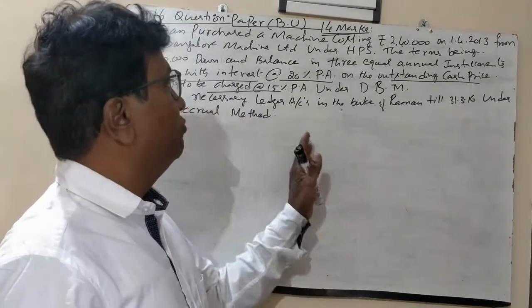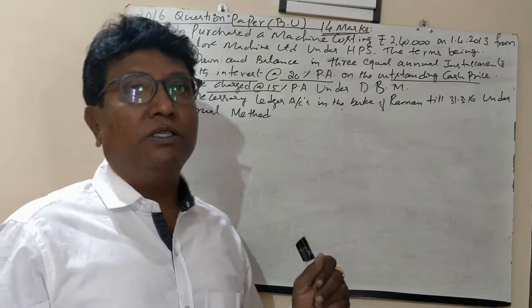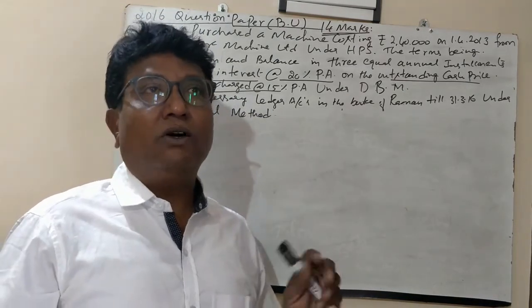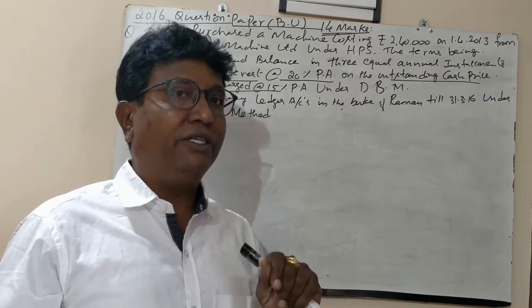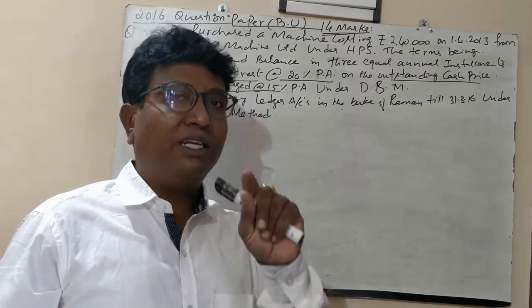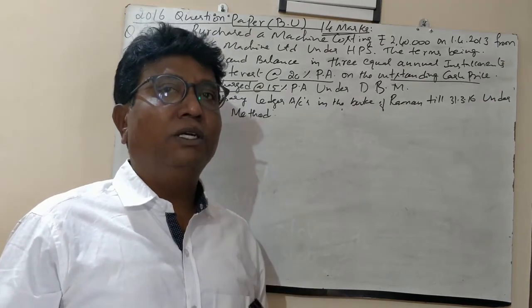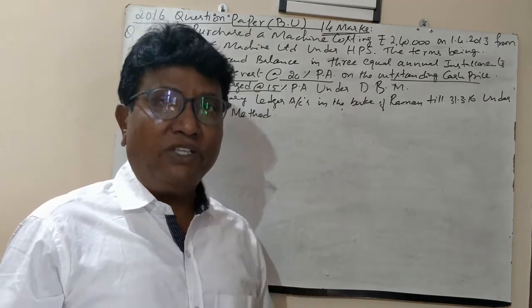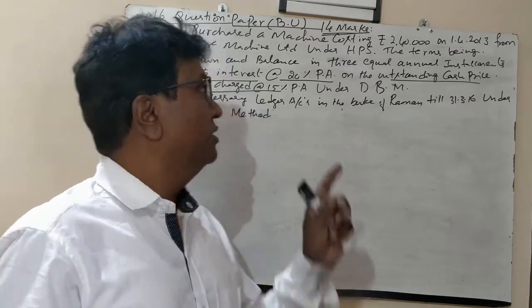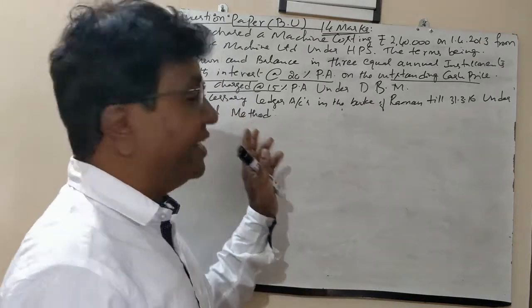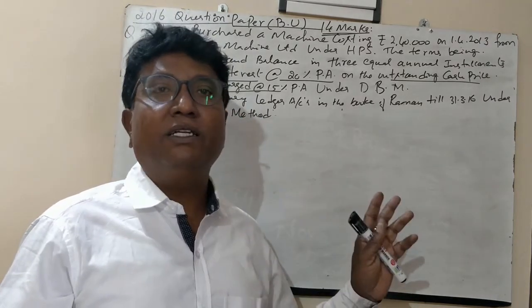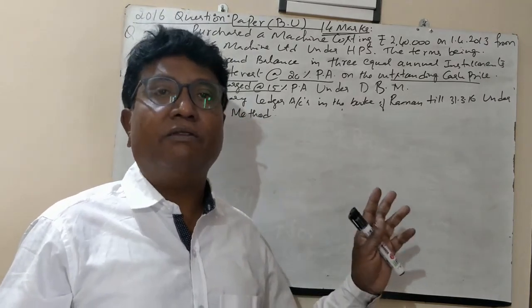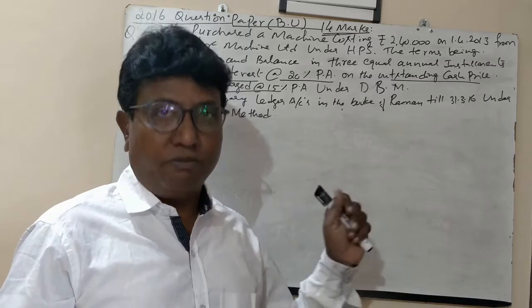The 14-mark question contains all 4 methods of calculation of interest. Any one method may come, but the second method and the fourth method of interest calculation are the most important.